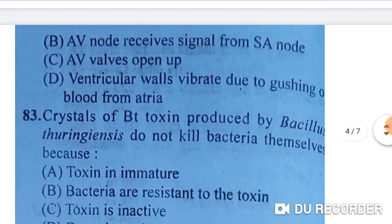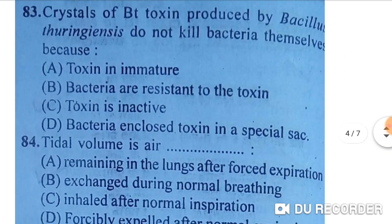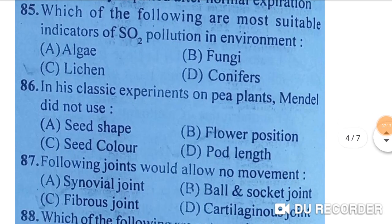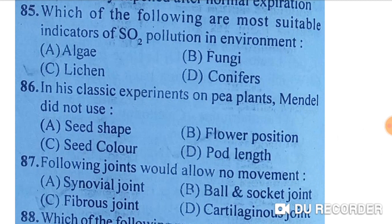Crystals of Bt toxin produced by Bacillus thuringiensis do not kill the bacteria themselves because the toxin is inactive — option C is correct. Tidal volume is the air exchanged during normal breathing — option B is correct. Which of the following are the most suitable indicators of SO₂ pollution in the environment? Lichens are the most suitable indicators of SO₂ pollution — option C is correct.